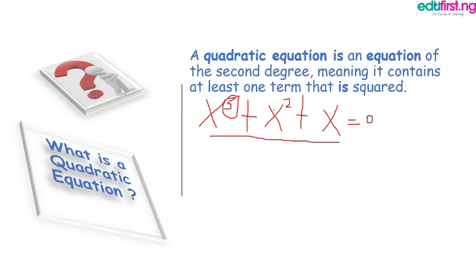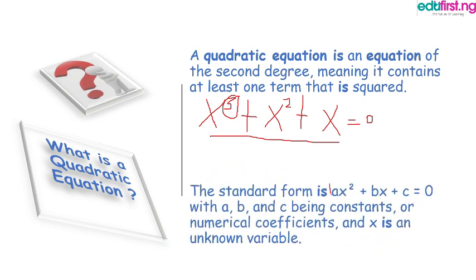A standard quadratic equation is of the form ax² + bx + c = 0, where a, b, and c are constants or numerical coefficients like 2, 3, 4, 5, 6, and x is the unknown variable.